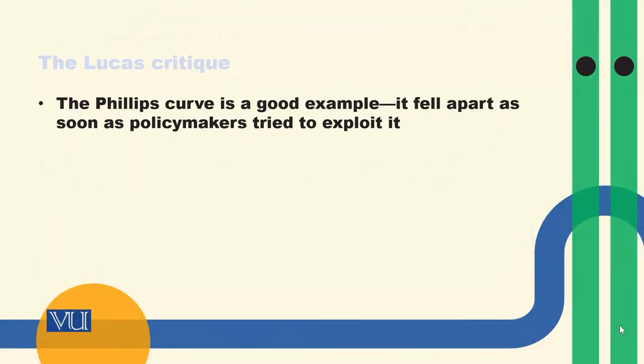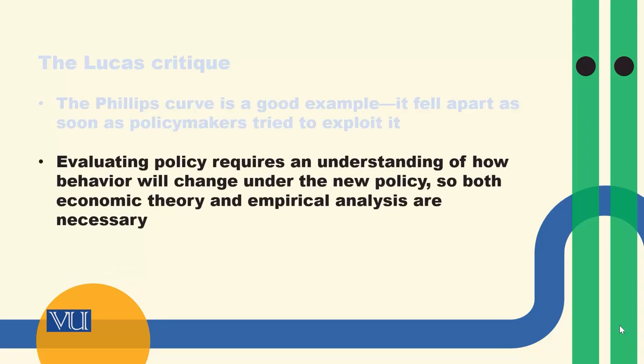The Phillips curve is a good example — it fell apart as soon as policymakers tried to exploit it. When policymakers tried to use it, they broke it. This means that people understood that the government's policy was applicable. Evaluating policy requires an understanding of how behavior will change under the new policy, so both economic theory and empirical analysis are necessary.